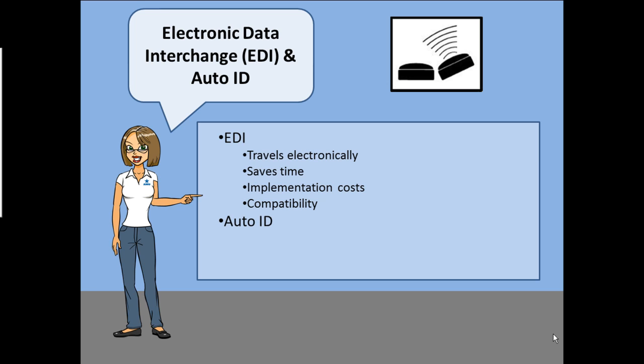Auto ID is another technological advancement employed in the transportation and logistics field. For example, barcoding, RFID, and voice data collection.